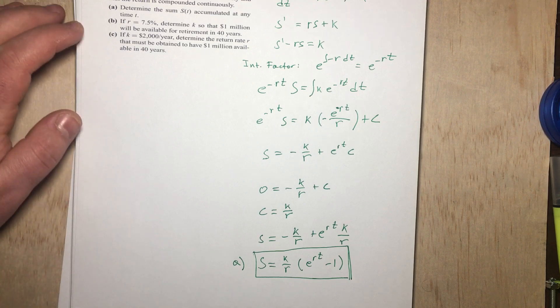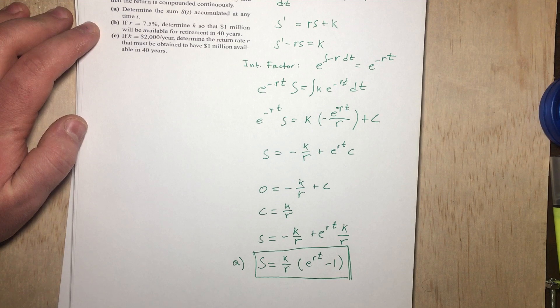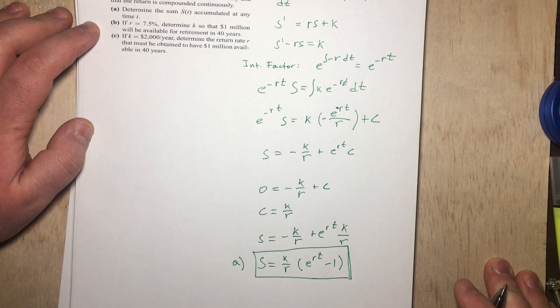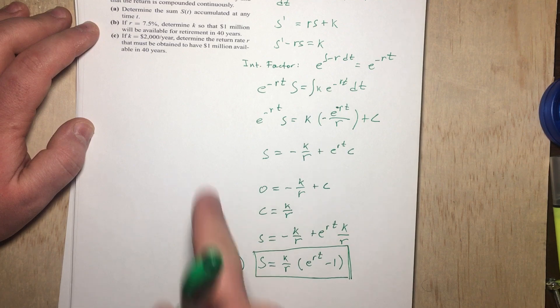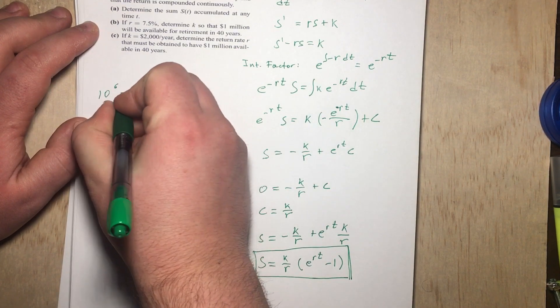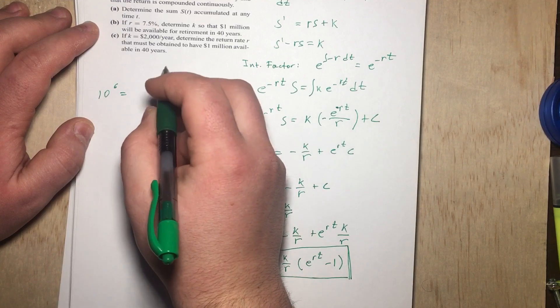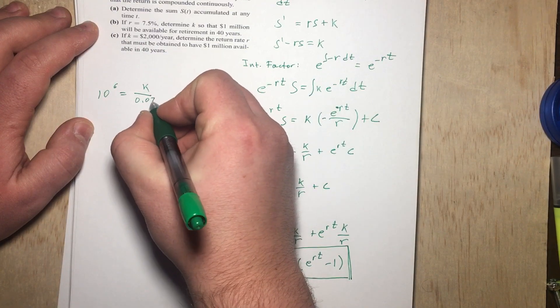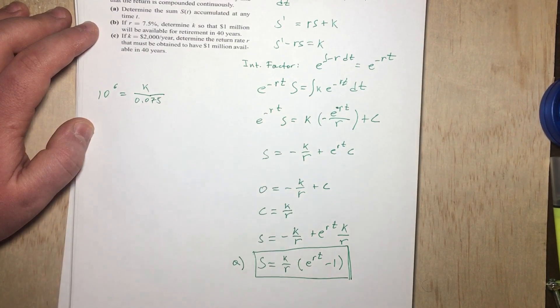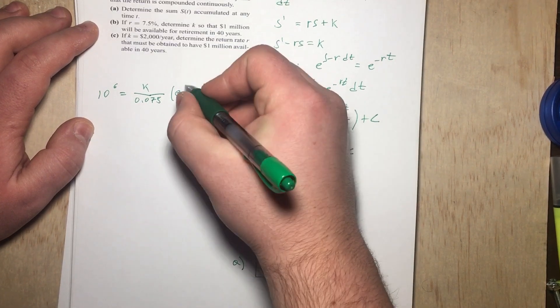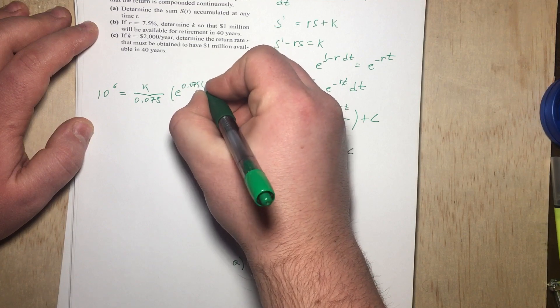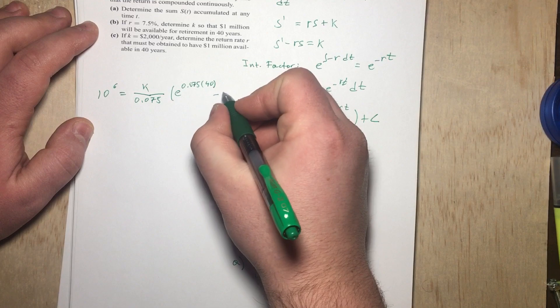So let's look at part B, where it says if R equals 7.5%, determine K so that $1 million will be available for retirement in 40 years. So basically, in this case, we're just going to have to plug numbers in, because we know S is $1 million, which is 10^6, that equals K/R. K, we don't know, but R is given 0.075. And then we have e^(R), which is 0.075, times 40 years, minus 1.